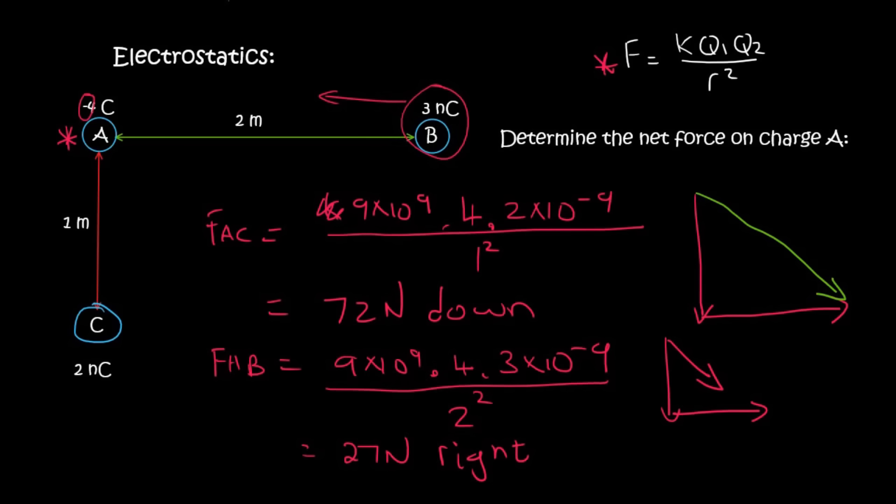And so we'll use a green line to show the final direction. So this here is 72 newtons. And this one is 27. Now this is a right angle. And so we could use Pythagoras to find the result, which is this one over here.